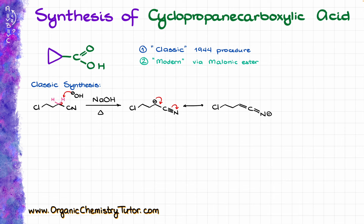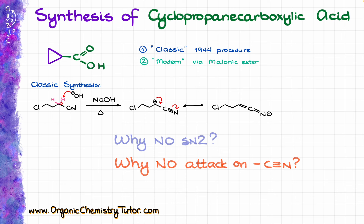You might wonder why we are not seeing any SN2 reactions and no direct attack on our nitrile by the hydroxide. Nitriles are not particularly electrophilic, so that reaction is a little slow — if anything else can potentially happen, other processes will be faster. Similarly, there is no SN2 attack on the electrophilic carbon bearing the chlorine because that reaction is also slower than the acid-base chemistry, so there is not much chance of SN2 happening before the acid-base step occurs.